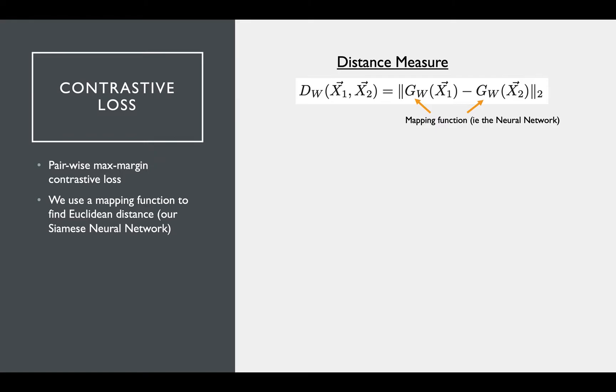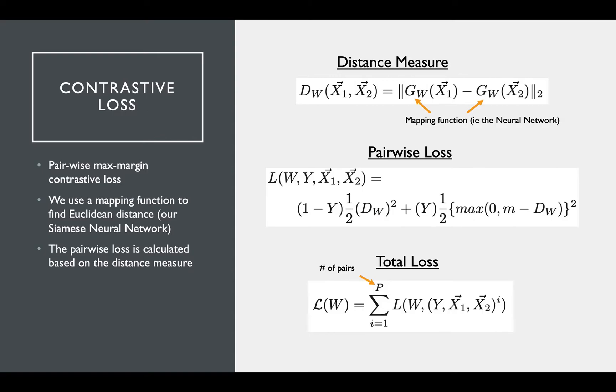Now that we have the distance measure, let's look at the loss for a single pair. One important note with the pairwise loss is that the inputs that are similar, like signatures from the same person, have a Y label of 0, and dissimilar inputs have a Y label of 1. This is kind of confusing, but it's the convention that's used.